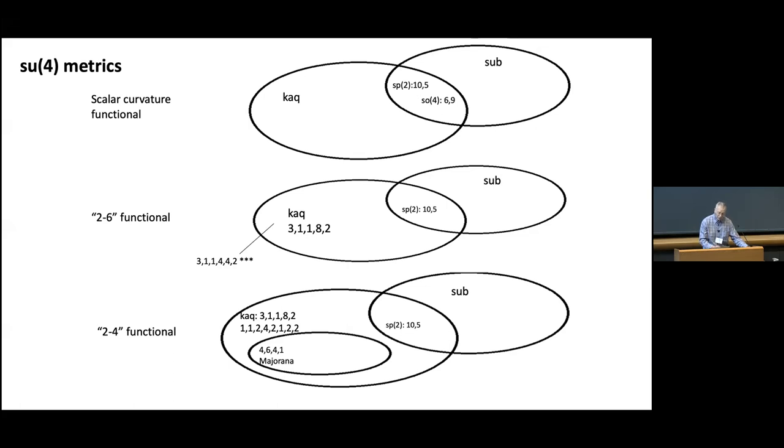But we also found other local minima, which are given by those strings of numbers. And those numbers add up to 15. And what they are is the degeneracy pattern. And they're listed from the smallest principal directions to the largest principal directions. And we sort of know what they look like.